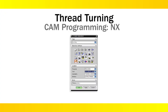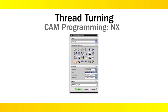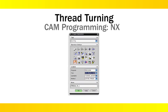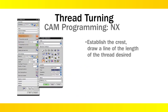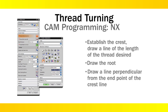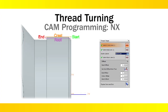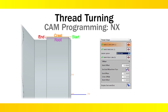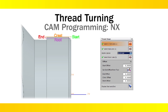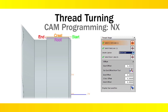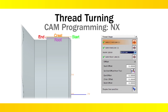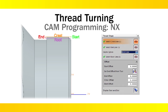To program this technique in Siemens NX6 CAM software, use the Thread OD or Thread ID operations for thread turning OD or ID threads. First, in modeling mode, establish the crest or upper limit of the thread and draw a line the length of the thread desired, then the root or lower limit of the thread and draw a line. Next, draw a line perpendicular to the endpoint of the crest line where the thread will be terminated. In manufacturing mode, use the Thread OD or Thread ID operation. Select the crest line at the side where the start of the thread is desired, then select the end line and root line. For tapered threads, specify the depth and angle instead of a root line, and fields will become available to specify the depth and angle for the tapered thread.